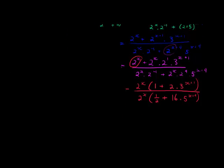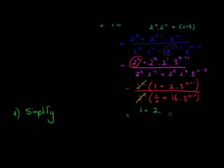The last step is simply to simplify. We cancel the 2 to the power of x terms, and we're left with 1 plus 2 times 3 to the power of x plus 1, over a half plus 16 times 5 to the power of x plus 4. Note that 2 times 3 to the power of x plus 1 cannot be written as 6 to the power of x plus 1 — we can only multiply bases if their exponents are the same; here 2 is just a coefficient. If you want, you can multiply through by 2 to eliminate the half in the denominator.